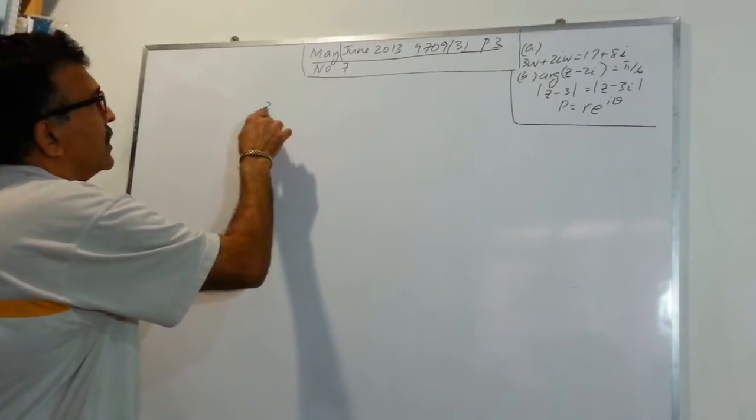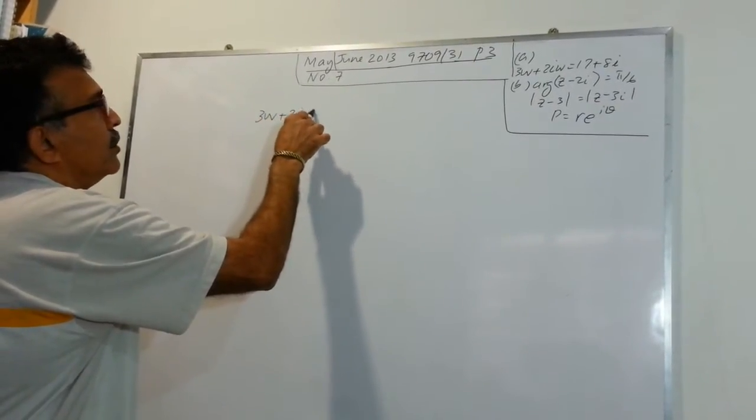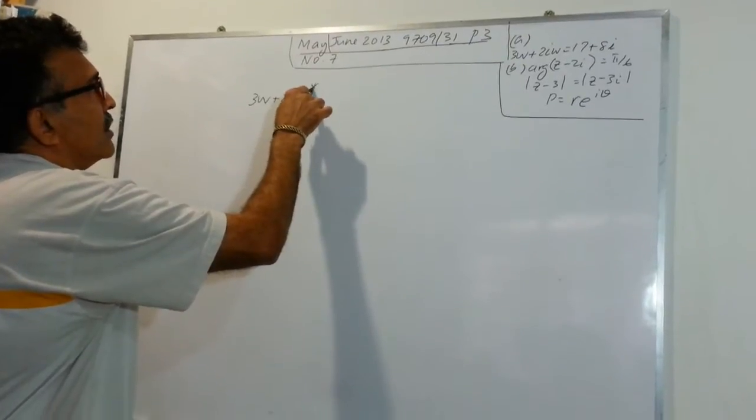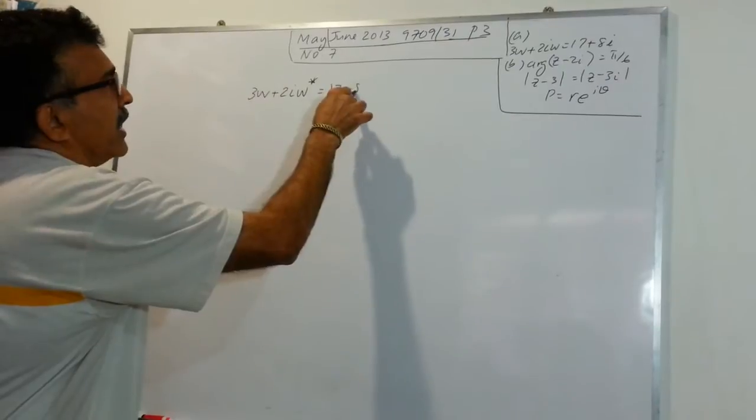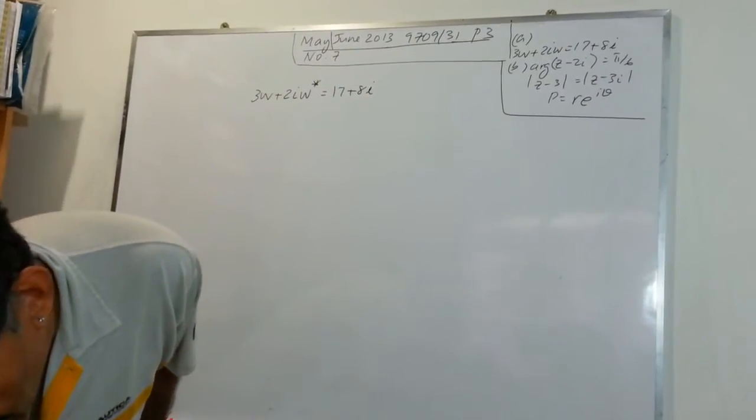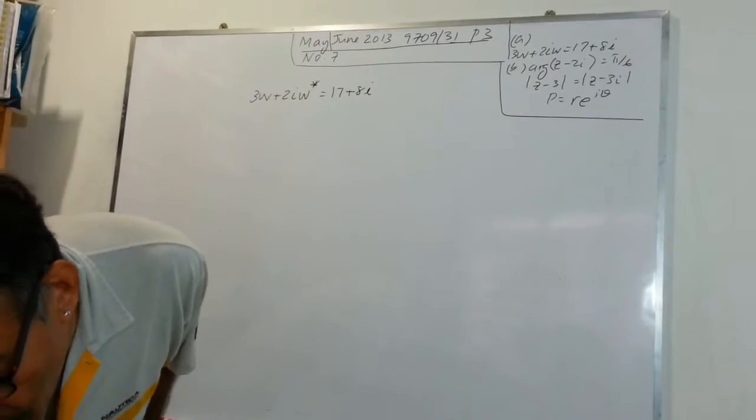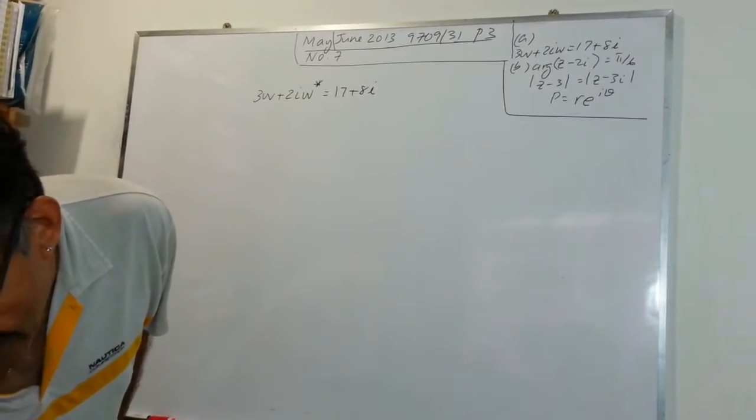So let's write it here. 3W plus 2IW star equals 17 plus 8I. I have 3W plus 2IW star equals 17 plus 8I.